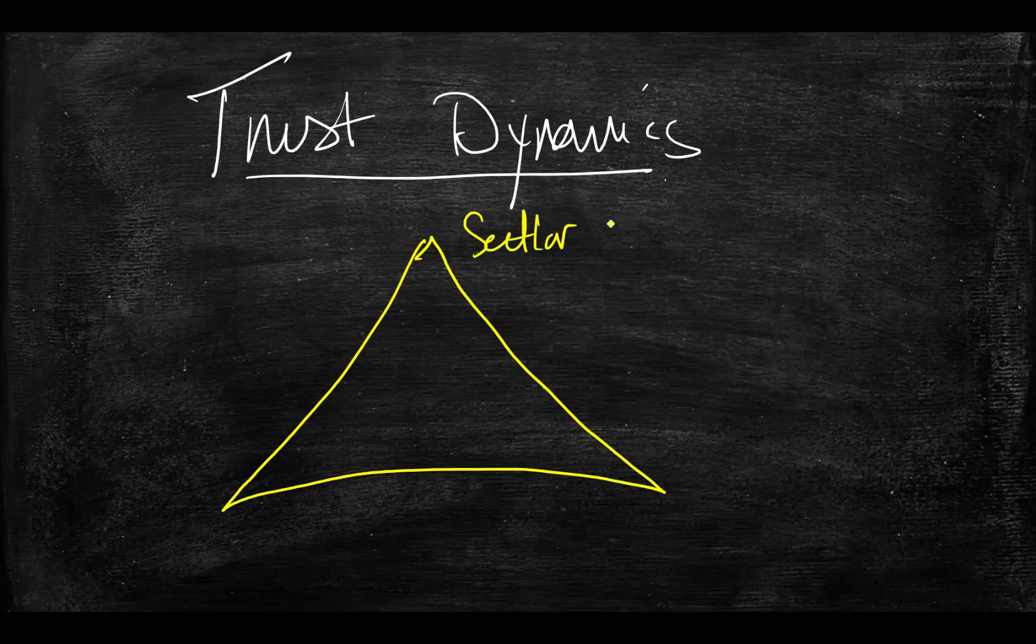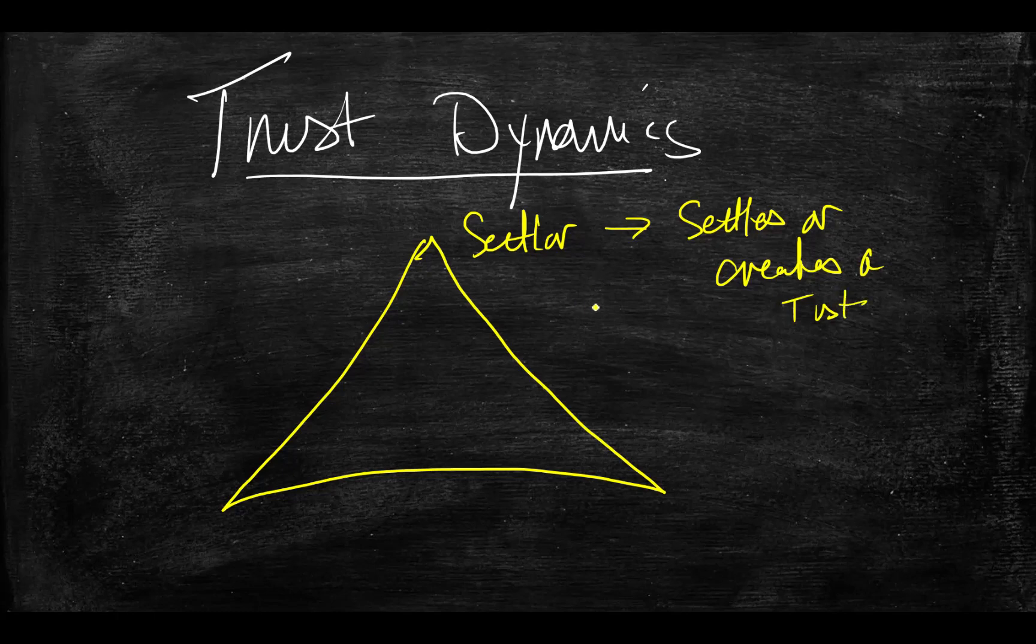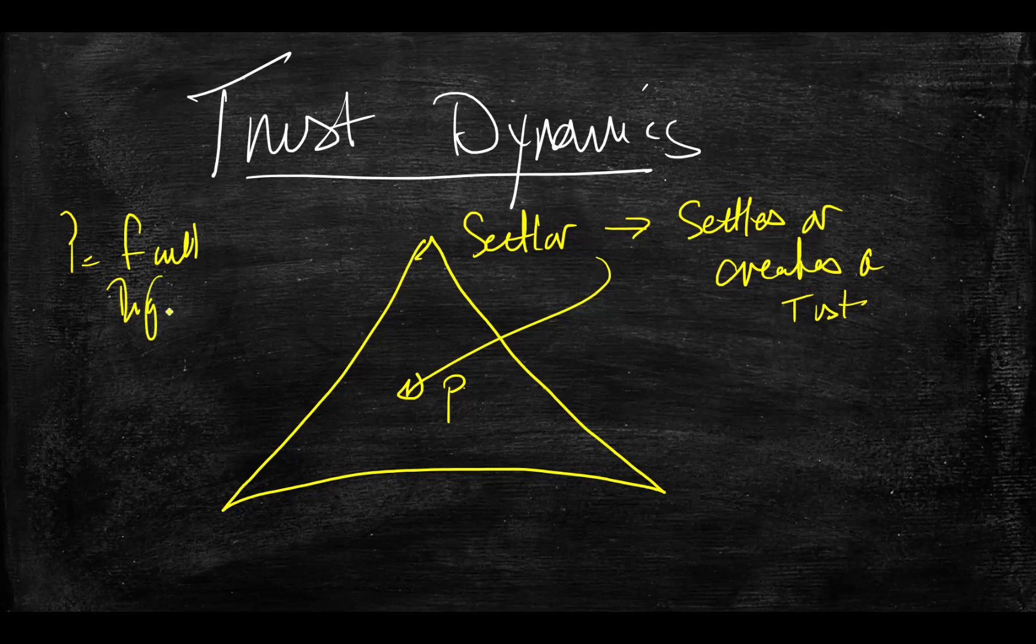I hope you can read my doctor's handwriting. A trust is set up with three main parties or offices. There's a settlor, and we understand that the settlor is the one that settles or creates the trust. They effectively have property that they own, so they place that property into trust, and they must own the property with full legal rights, title, and absolute interest in the property.